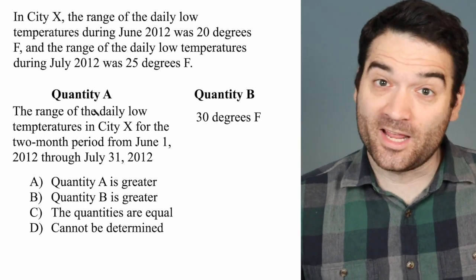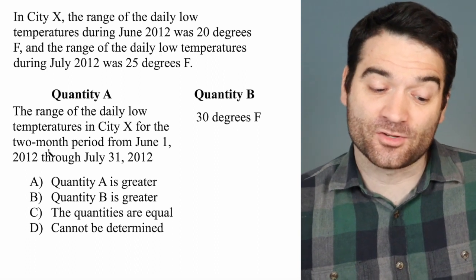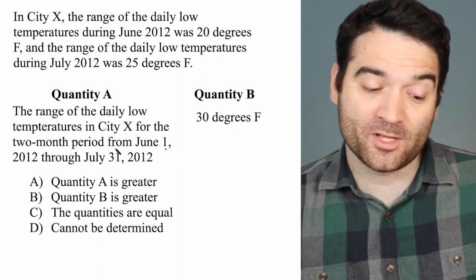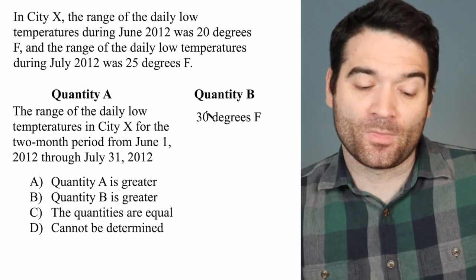So we want to know what's greater: Quantity A, which is the range of the daily low temperatures in City X for the two-month period from June 1, 2012 through July 31, 2012, or 30 degrees Fahrenheit.